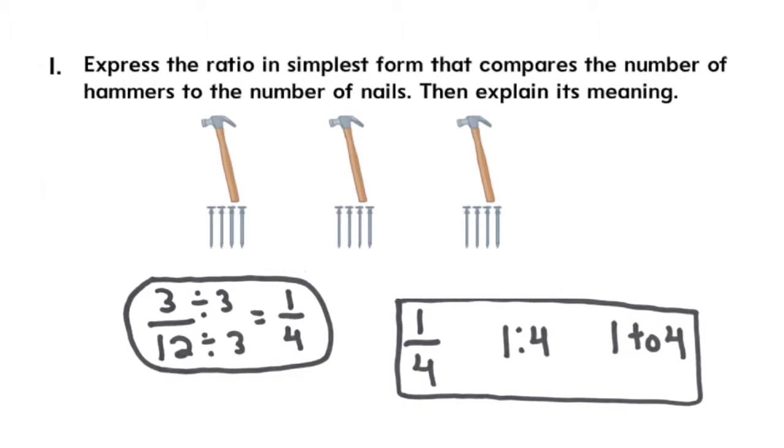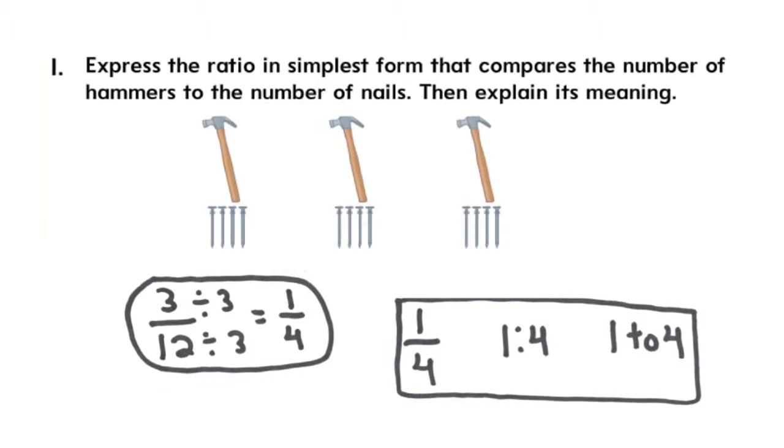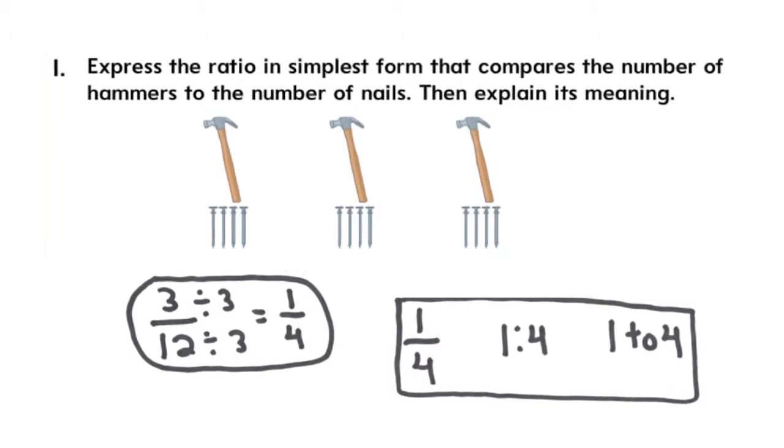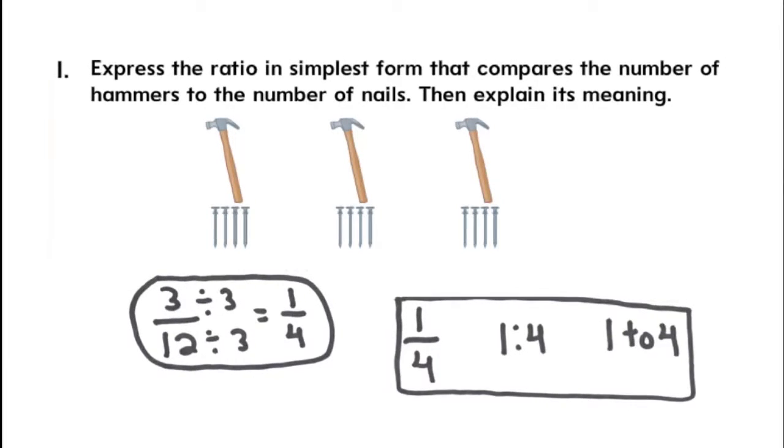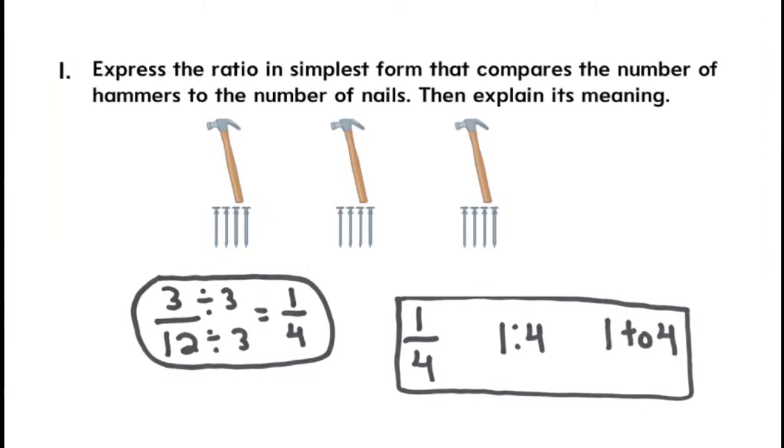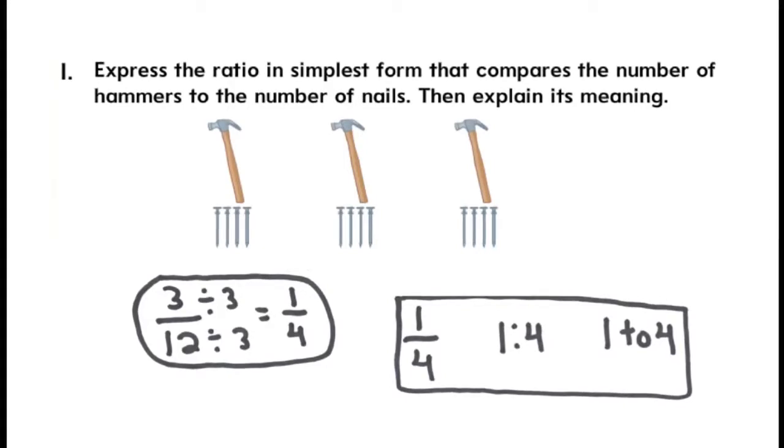Then you ask yourself, can I simplify? In this case, you can simplify both numbers by three. The final answer is one to four. And just to be on the safe side, write it down in all three forms.